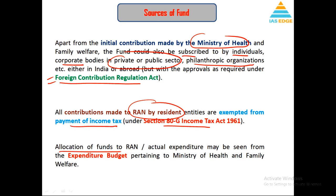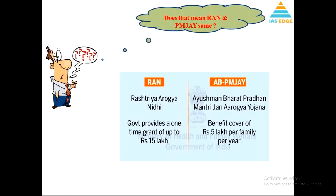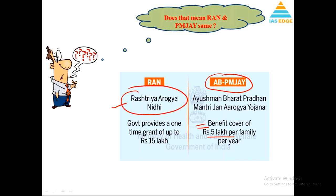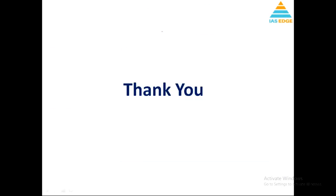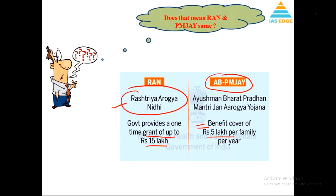From an exam point of view, allocation of funds can be seen in the expenditure budget under Ministry of Health. A key question is: what is the difference between RAN and Ayushman Bharat (PM-JAY)? Under PM Jan Arogya Yojana, the benefit is only up to 5 lakh rupees. If treatment cost goes beyond 5 lakh, Rashtriya Arogya Nidhi comes into the picture and can provide a one-time grant of up to 15 lakh. That is the key difference between Ayushman Bharat and Rashtriya Arogya Nidhi.